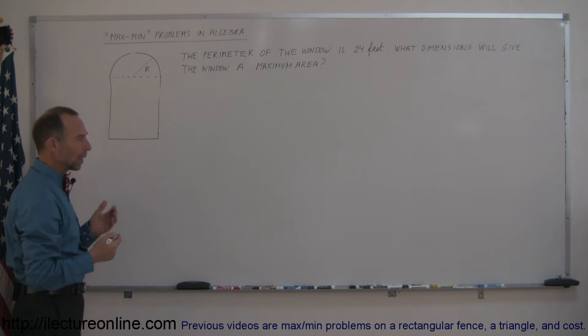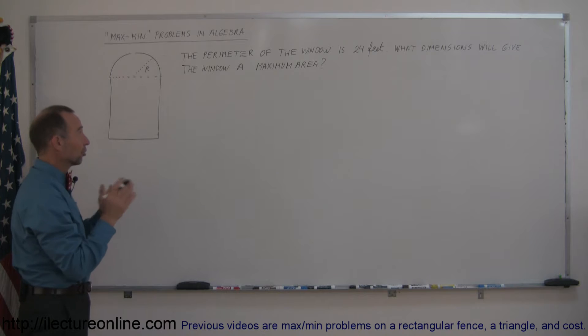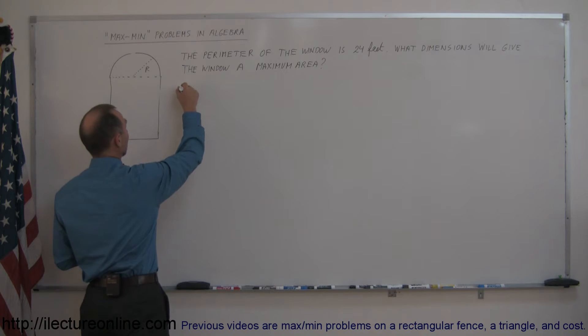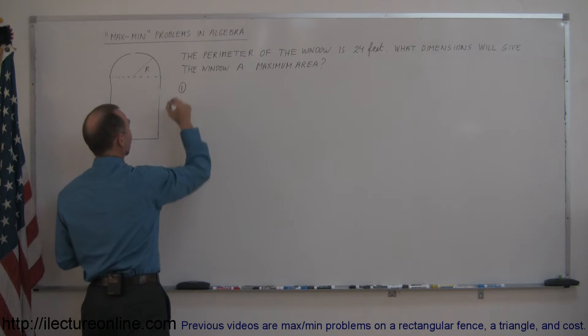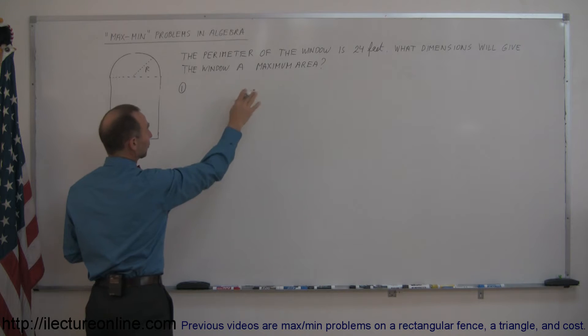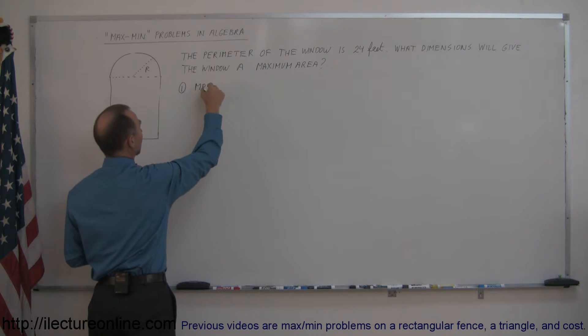The way you normally do max-min problems is you start out by first determining what's being maximized. In this case, the area is supposed to be maximized. So we write that down: maximum area.